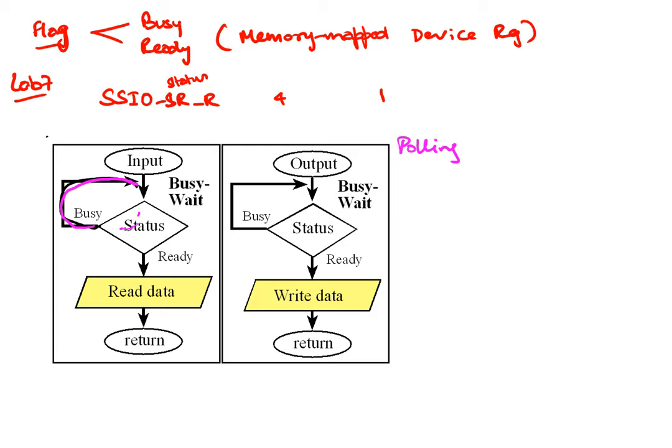Busy wait is definitely better than blind cycle synchronization. With blind cycle, we err on the side of caution and use a conservative delay, whereas with busy wait we know precisely when the device is ready by reading the flag and then move on with the operation.